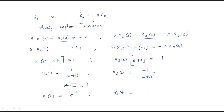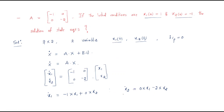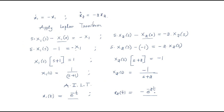And X2(s) = -1/(s+2) becomes x2(t) = -e^(-2t). So the final answers are x1(t) = e^(-t) and x2(t) = -e^(-2t). This is the procedure to find the state equations given the state matrix and initial conditions.